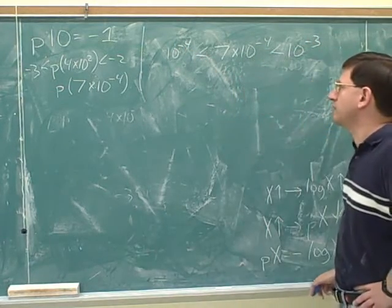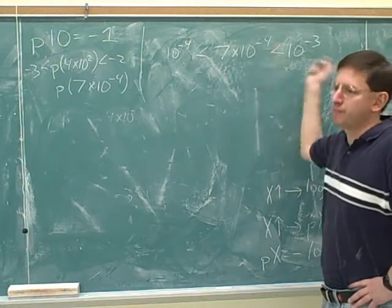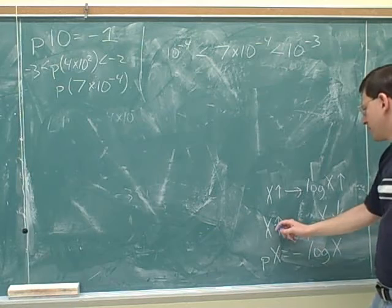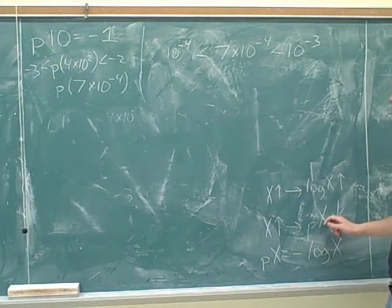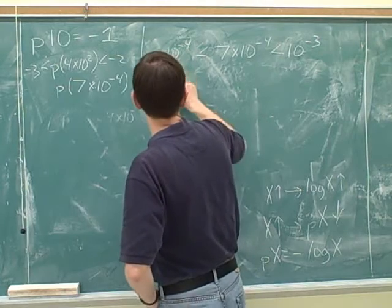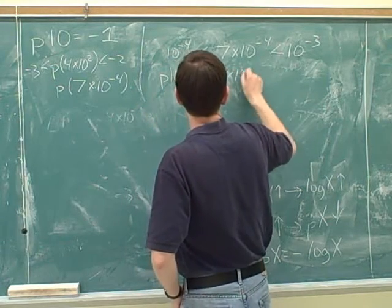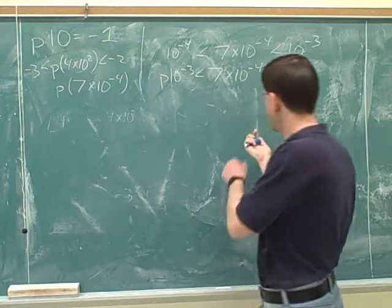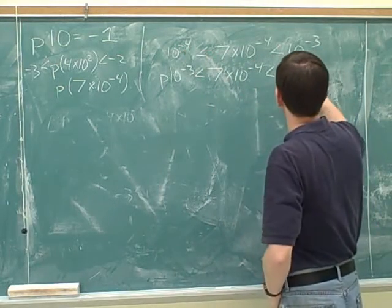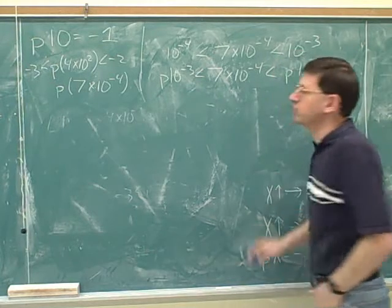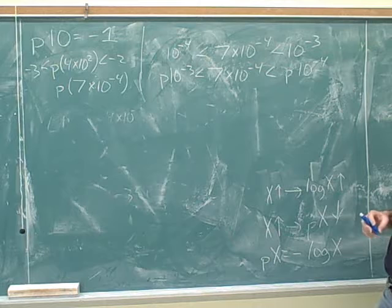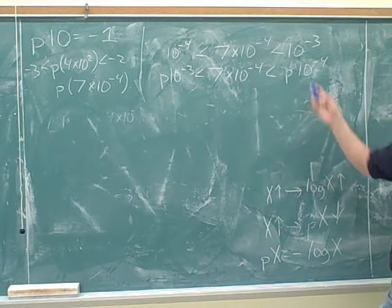Then you took the p of everything, and you remember that when you take the p of the inequality, you have to flip the inequalities. Because the bigger the number is, the smaller its p is going to be. This was the biggest number, so it's going to have the smallest p. That's the most important thing to remember here. And this was the smallest number, so it's going to have the biggest p.